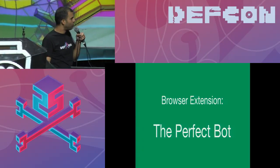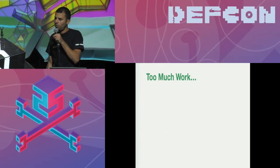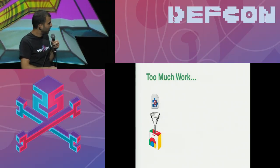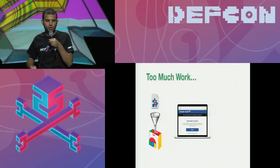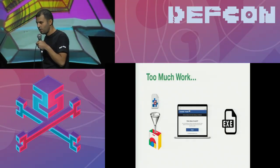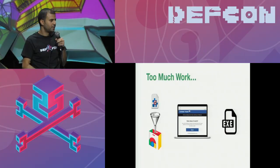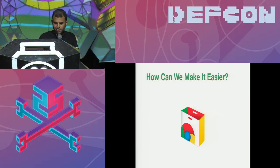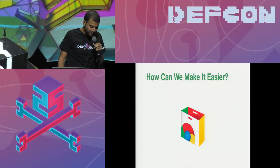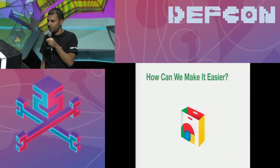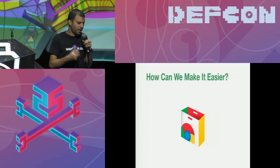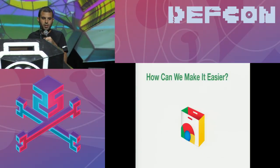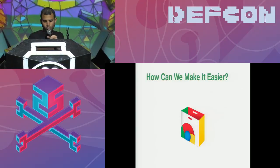But these campaigns we just saw are very complicated. Smuggling an extension into the Google Web Store and convincing victims to install it, or running JSE or EXE files on victims' devices, is very hard and demands a lot of effort. How can we make it easier? In order to get the abilities of an extension, we only need to be able to execute JavaScript in the context of the extension — and for this we can use the same old vulnerability we all know and love: XSS.